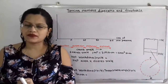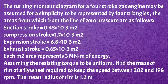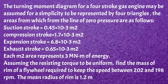First I will read the given problem. The turning moment diagram for a four stroke gas engine may be assumed for simplicity to be represented by four triangles, the areas of which from the line of zero pressure are: suction stroke 0.45 × 10⁻³ m², compression stroke 1.7 × 10⁻³ m², expansion stroke 6.8 × 10⁻³ m², exhaust stroke 0.65 × 10⁻³ m². Each meter square of area represents 3 mega newton meter of energy. Assuming the resisting torque to be uniform, find the mass of the rim of the flywheel. The speed is required to be kept between 202 and 198 rpm, and the mean radius of the rim is 1.2 meter.